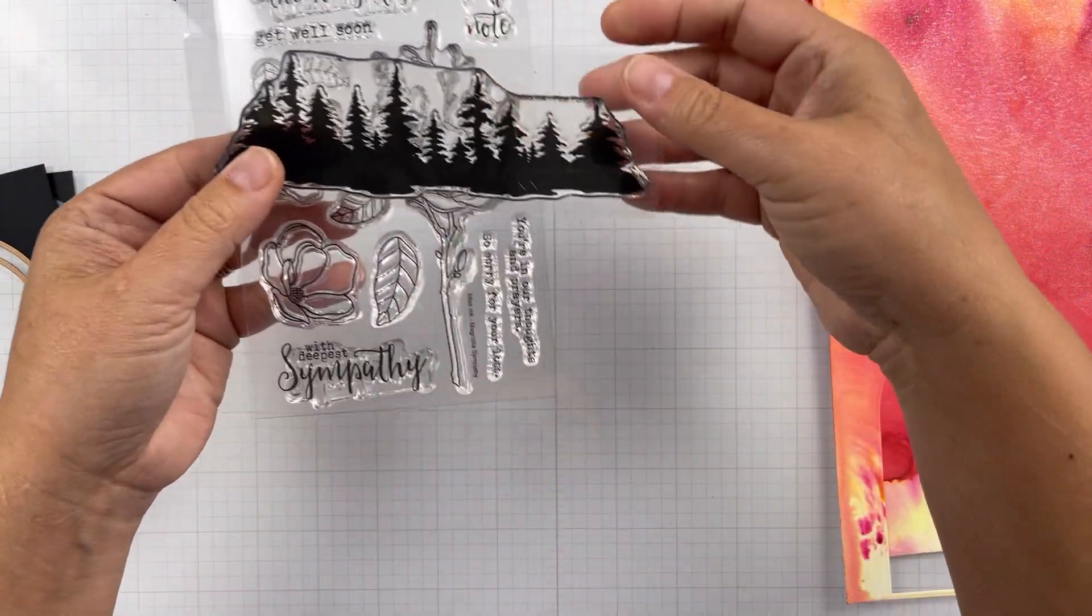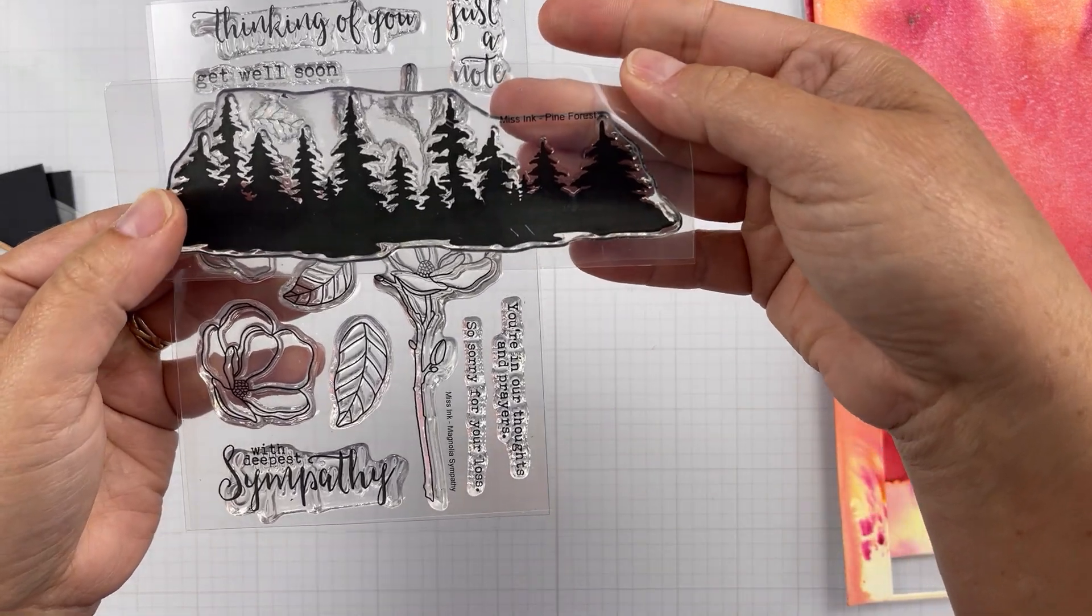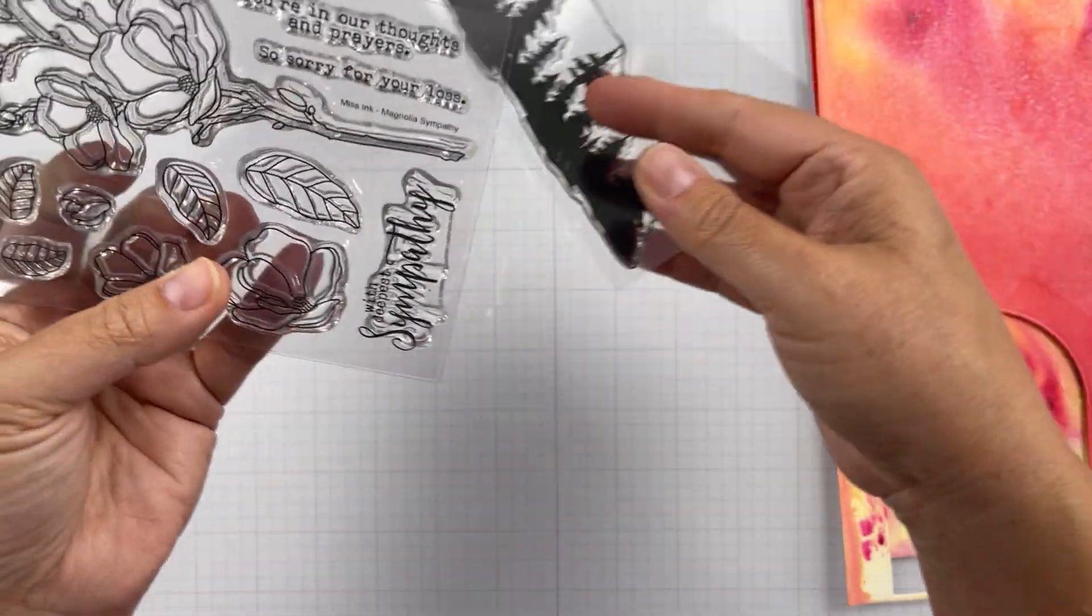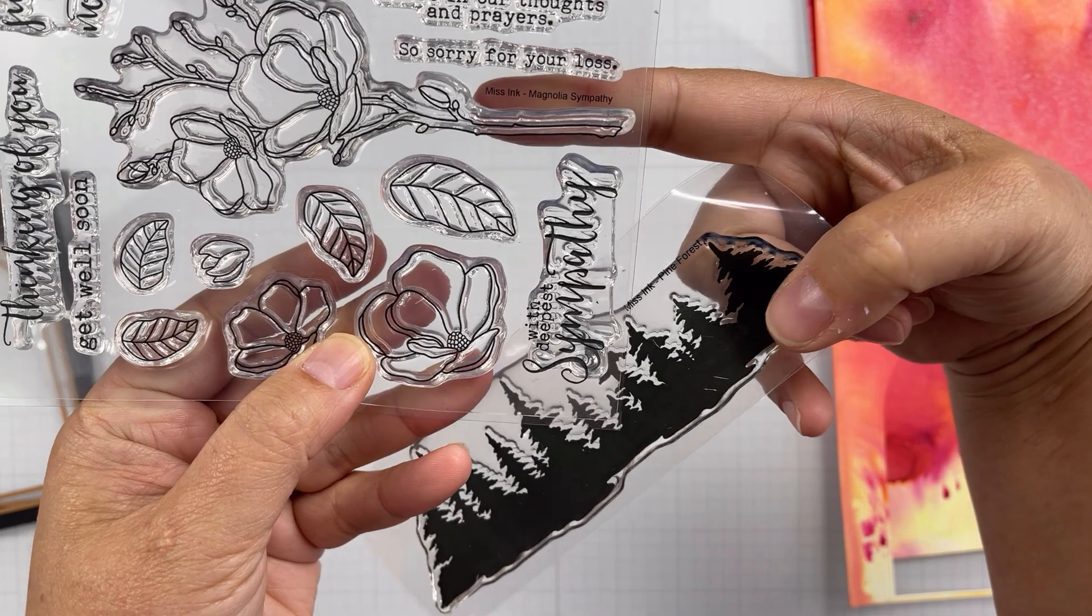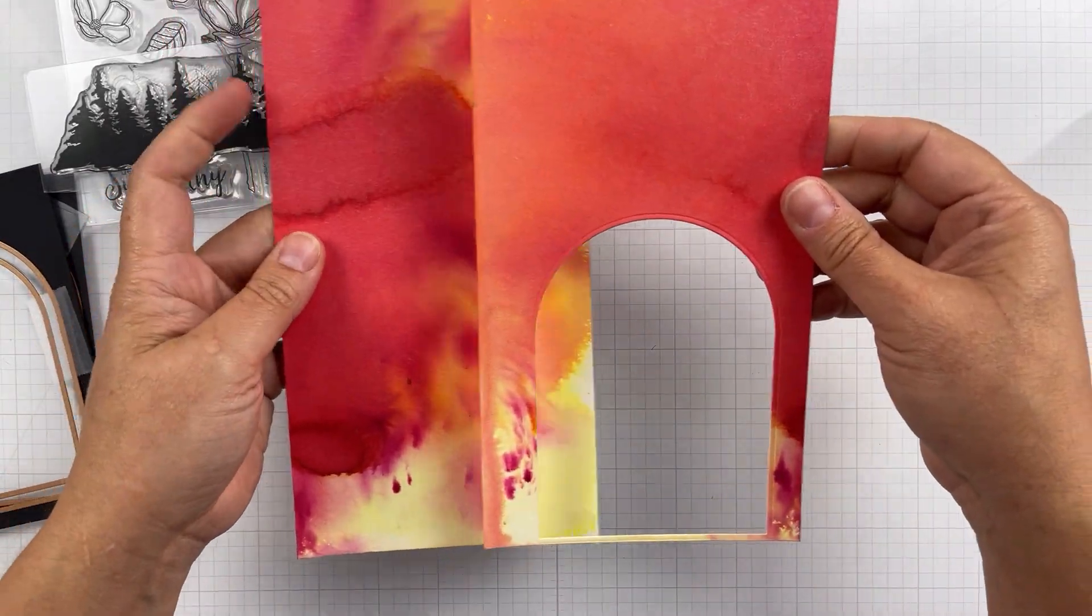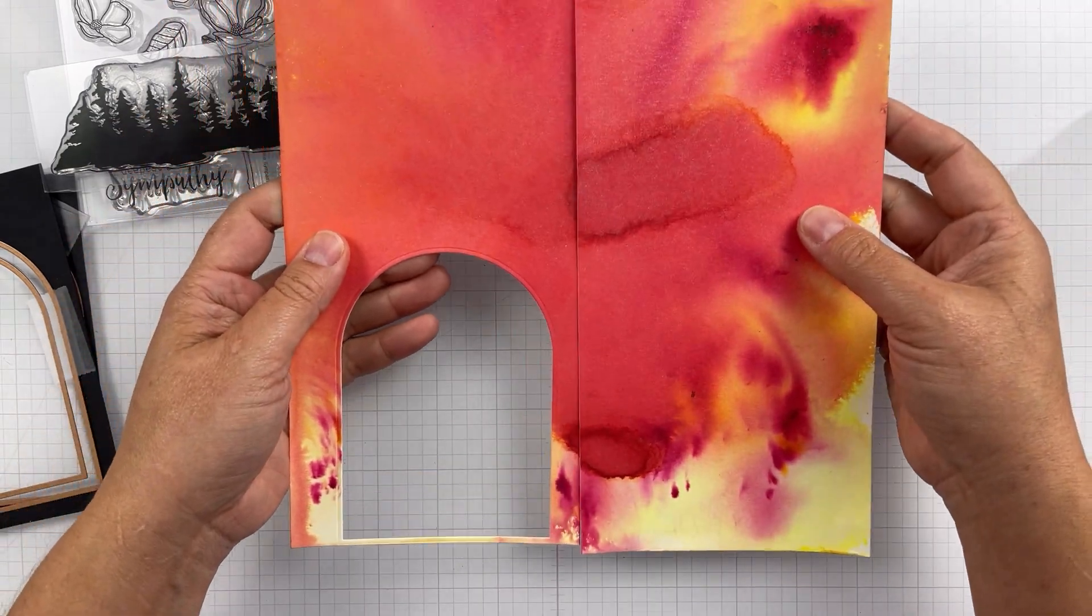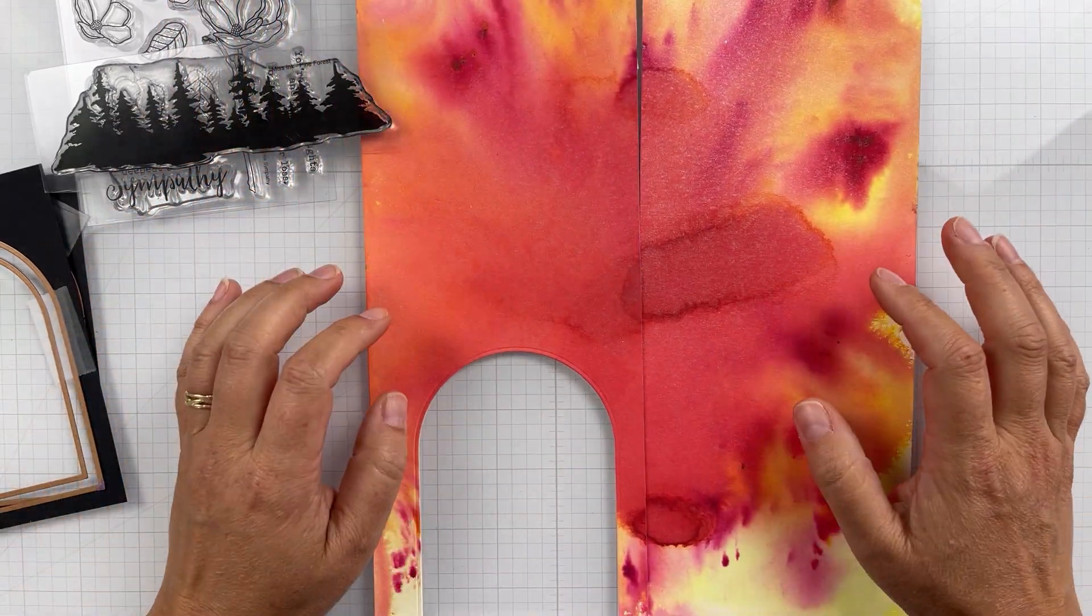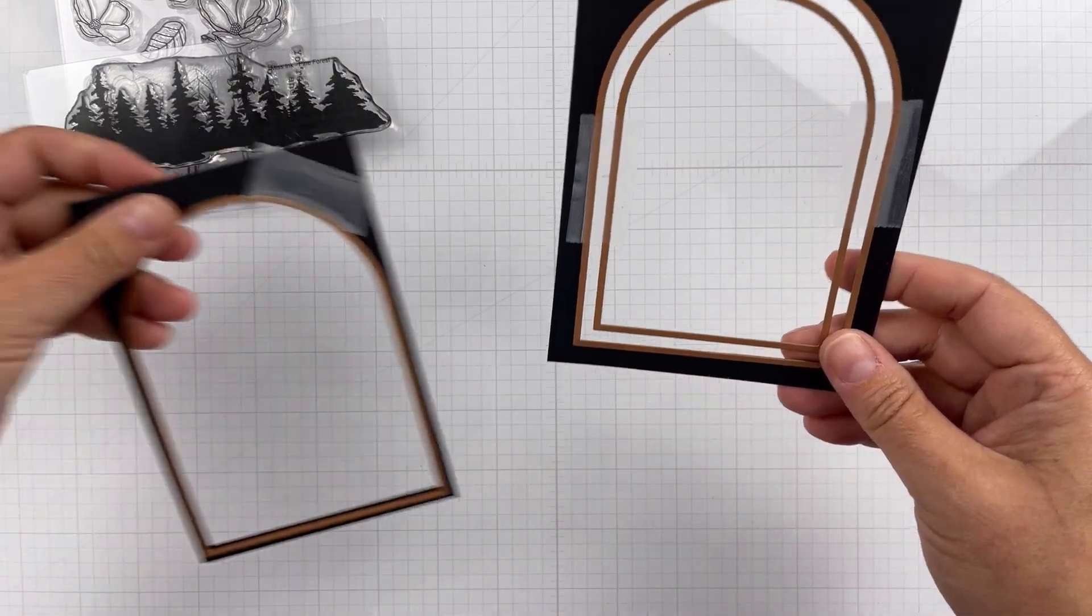It's just this really nice line of pine trees, and I'm going to use the Just a Note Sentiment from the Magnolia Sympathy Stamp Set. This was actually the whole piece, and I just cut it in half and used my arch dies from Spellbinders to be able to cut those out.